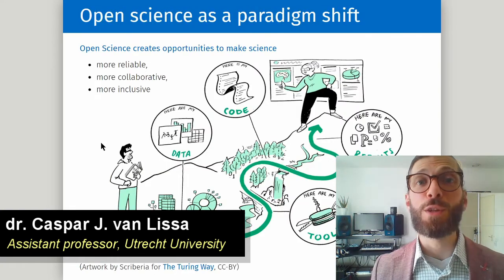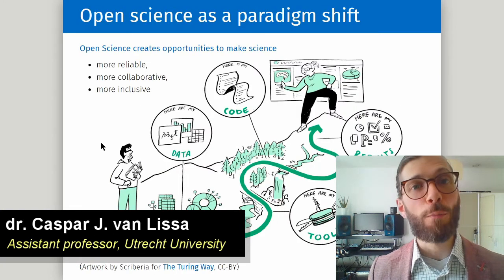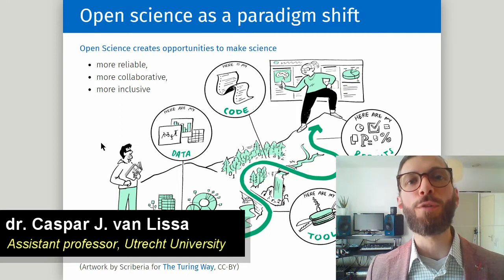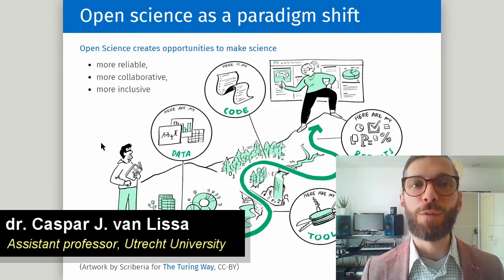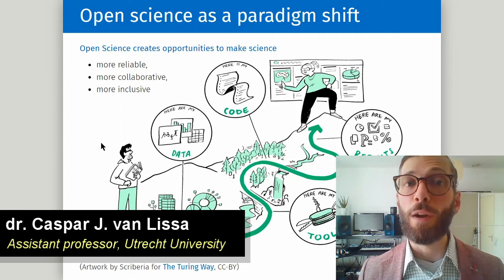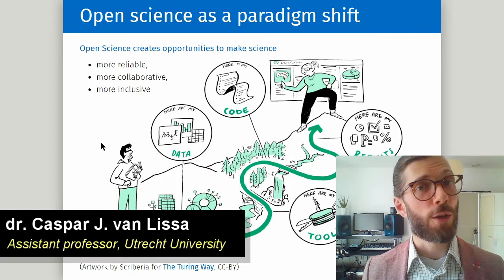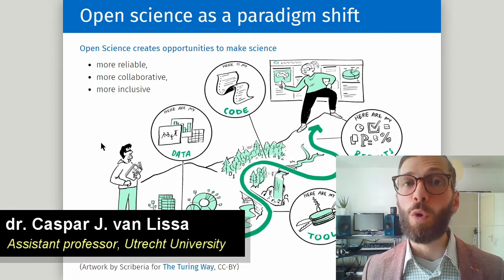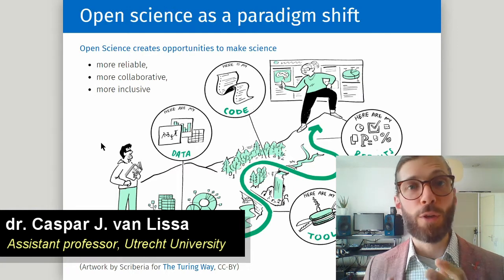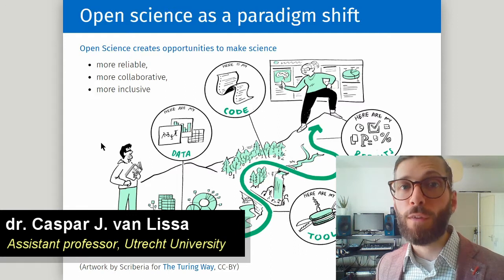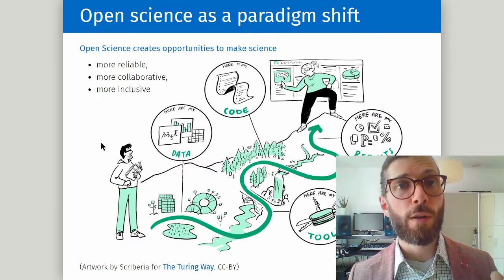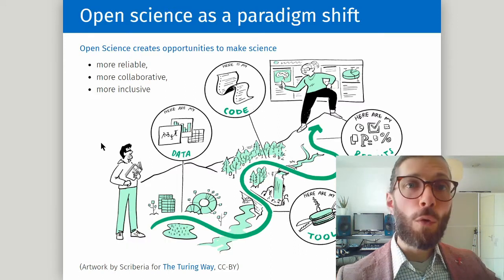If you're watching this presentation you're probably already convinced that open science is an important paradigm shift that creates opportunities to make science more reliable because we can check our own work and other people's work, more collaborative because we can share an entire project with other researchers that we are already working with or even